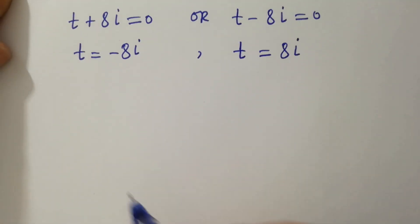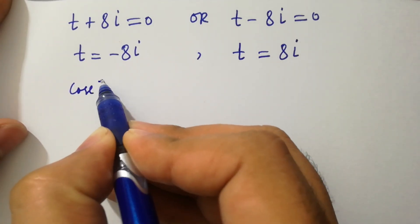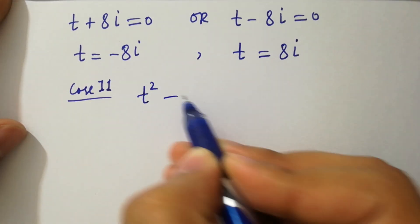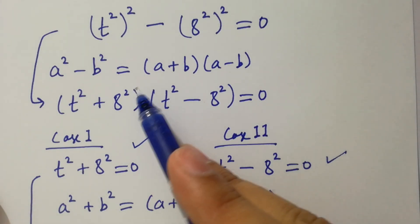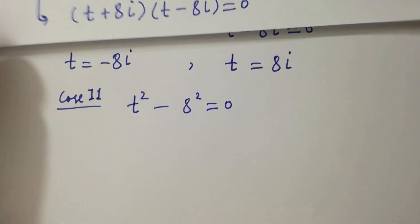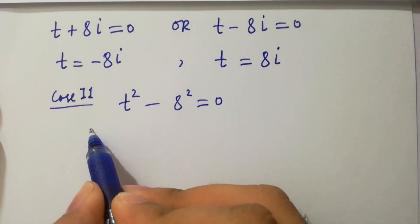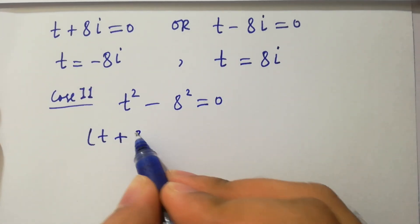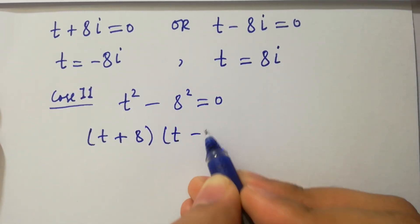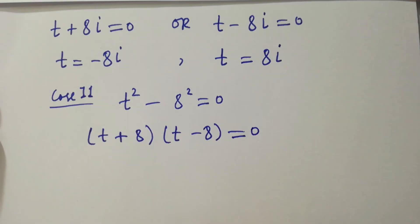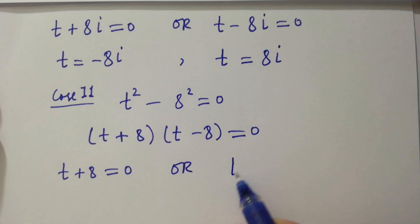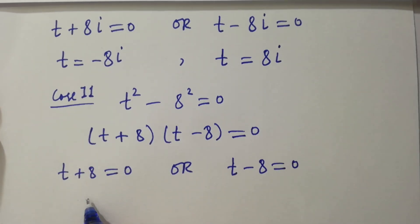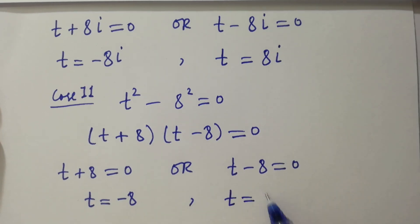Second case: t squared minus 8 squared equal to 0. Apply the formula of a squared minus b squared equals a plus b times a minus b. We have t plus 8 times t minus 8 equal to 0. Either t plus 8 equal to 0 or t minus 8 equal to 0, giving t equal to minus 8 and t equal to plus 8.